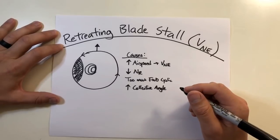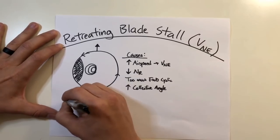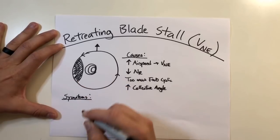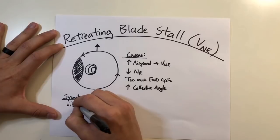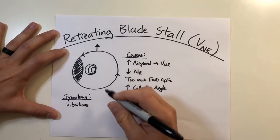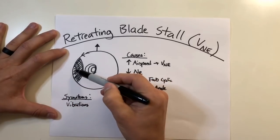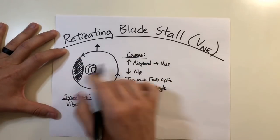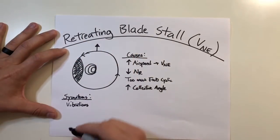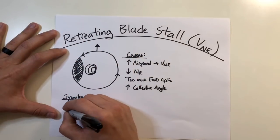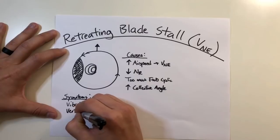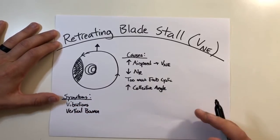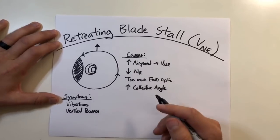There are a few symptoms as you approach the retreating blade stall. The first one is vibrations. As the blades pass the nine o'clock position and begin getting to the stall condition, you begin to get vibrations because of differences in lift and drag throughout the rotor system. This can potentially result in a vertical imbalance as the blades pass that position. This should be one of your first indications that you should probably start slowing down.